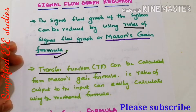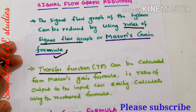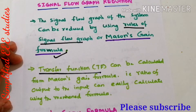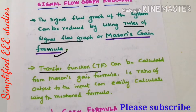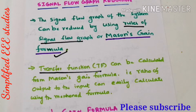That means you can identify the relation between output and input. We can easily calculate the transfer function by applying this formula. Today I will be showing you how to calculate the transfer function with the help of Mason's gain formula. Let us have a brief discussion.